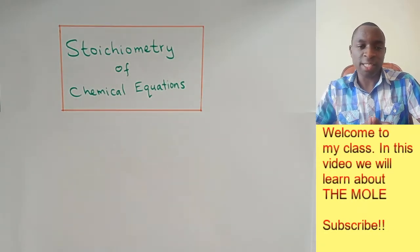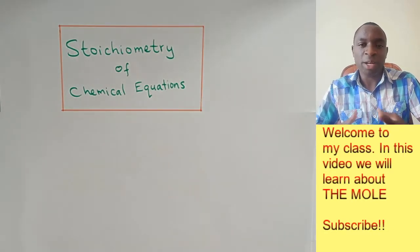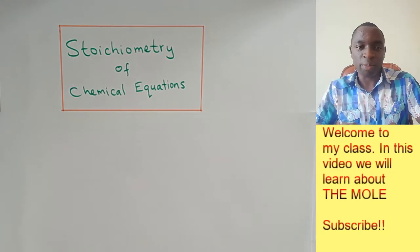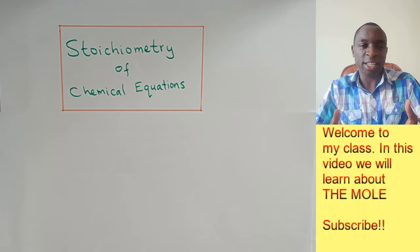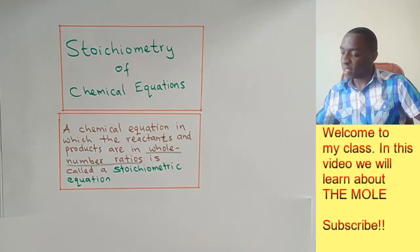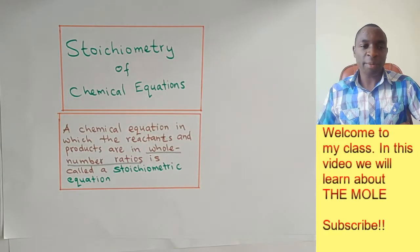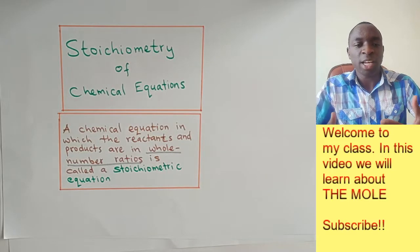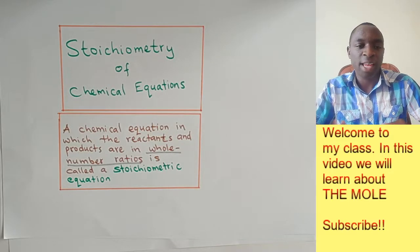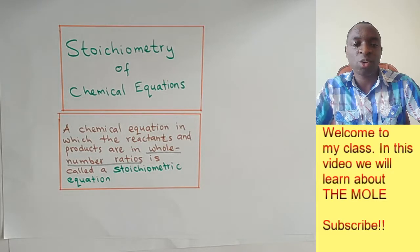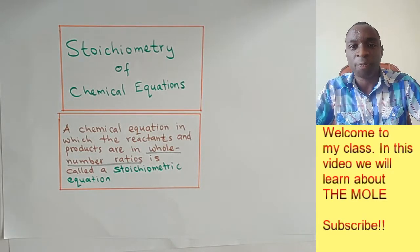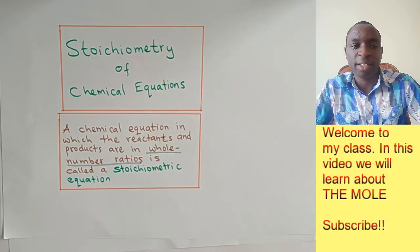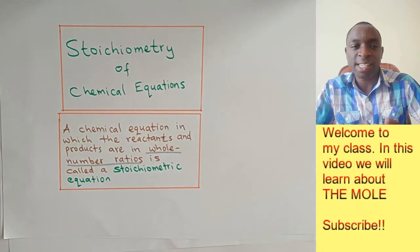Now a lot of students find this term a little bit confusing, but all it means is very simple. You'll find that the meaning of stoichiometry is not something that you haven't learned before. A chemical equation in which the reactants and products are in whole number ratios is called a stoichiometric equation, and it is exactly the same equation you have been writing all the time.